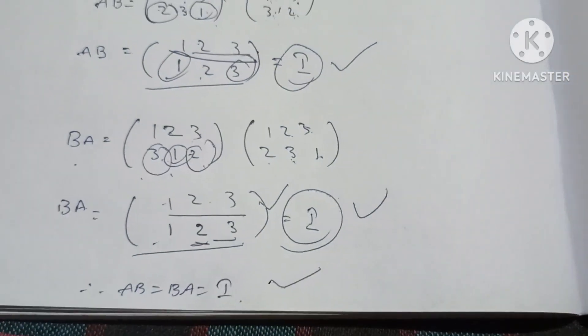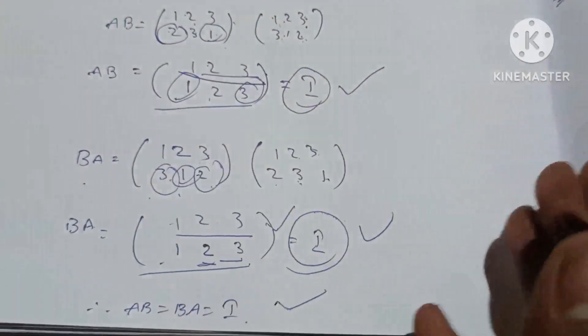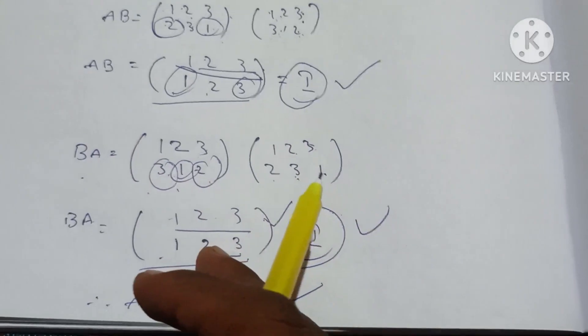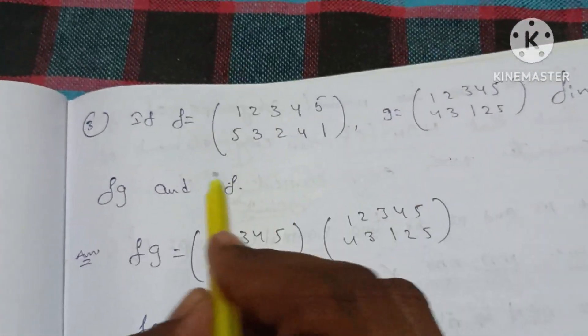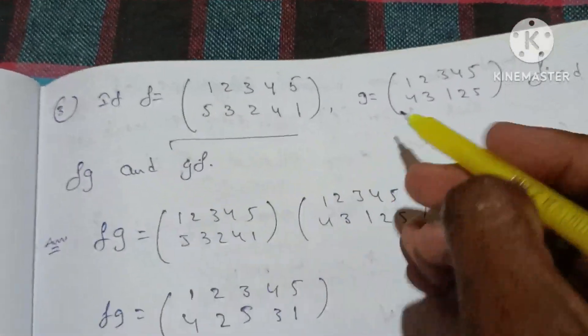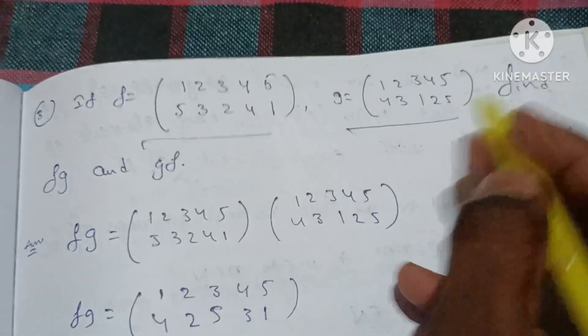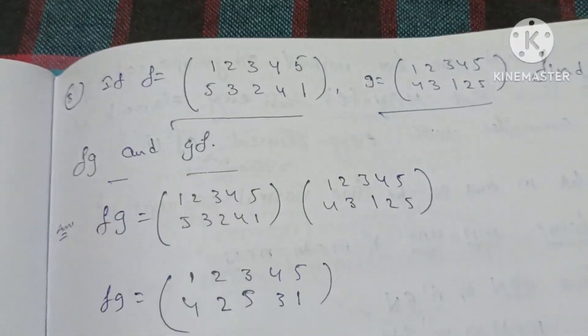And write a·b — the product of two permutations. So we have another problem. If f and g are equal to the permutations, find fg and gf. We will do the same.